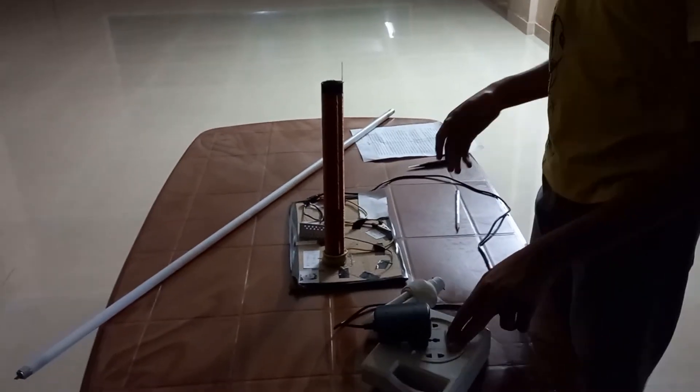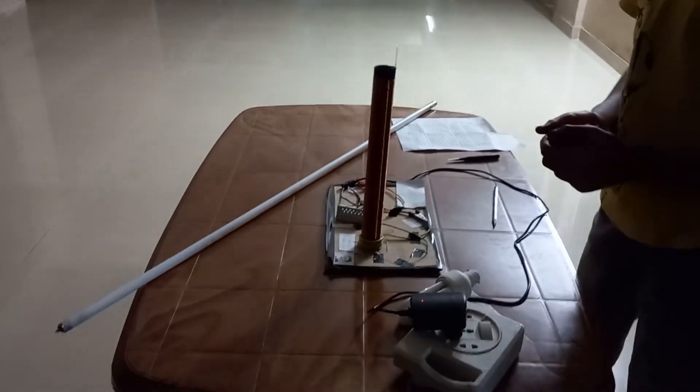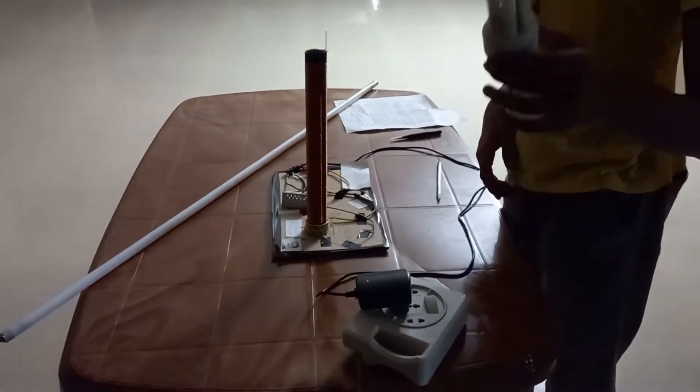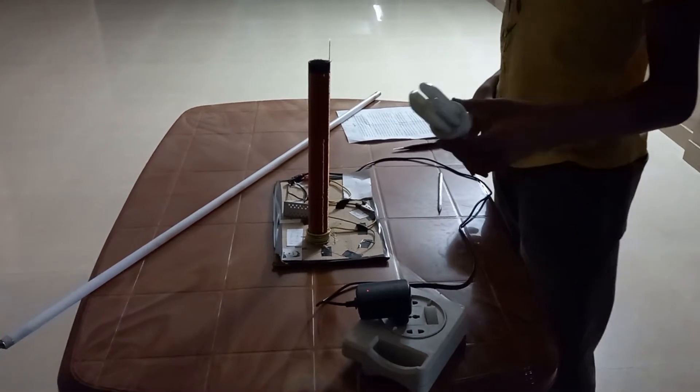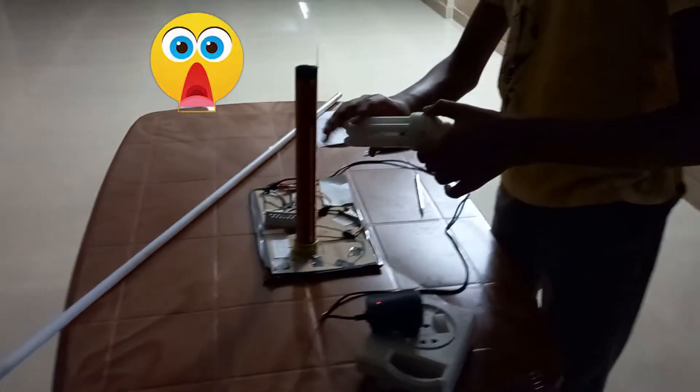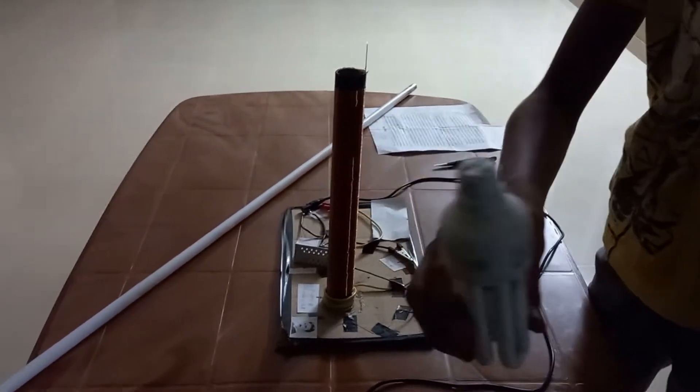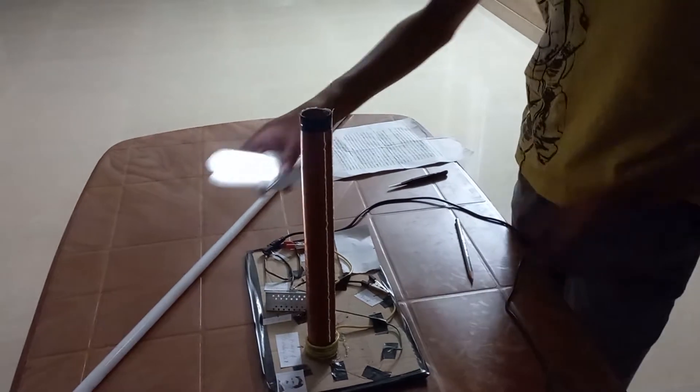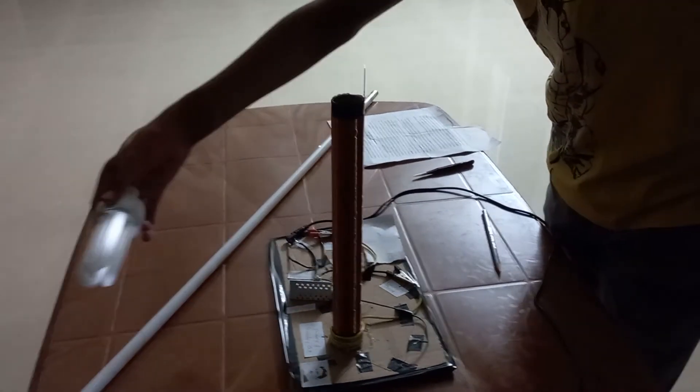The best part of Tesla coil is that it produces wireless electricity which means that when I bring this fluorescent bulb near the Tesla coil, it glows without wire. Here I don't have any wire connected to this bulb. As I move far from the Tesla coil, the bulb stops to glow.